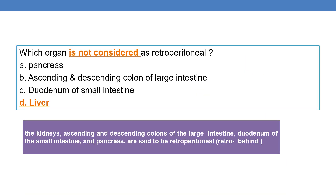Coming to the next question: which organ is not considered retroperitoneal? Peritoneum is the serous membrane enclosing the abdominal cavity. 'Retro' means behind — behind the peritoneum. Kidneys, ascending and descending colon of the large intestine, duodenum of the small intestine, and pancreas are retroperitoneal organs. The liver is not considered retroperitoneal because it is the only digestive organ that attaches to the anterior abdominal wall.